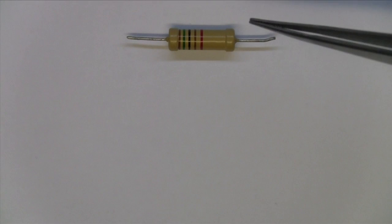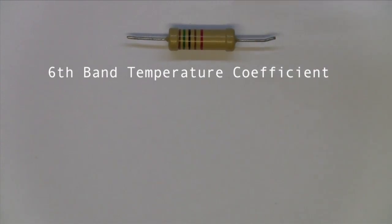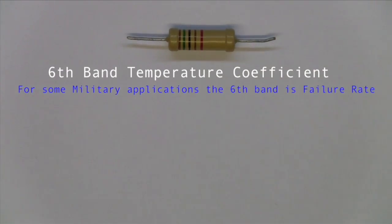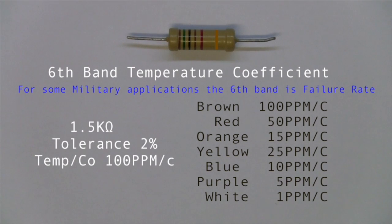Some resistors have a 6th band. The 6th band on the resistor is what's known as the temperature coefficient. If we put one in to demonstrate, that adds the temperature coefficient on the end. So if it was brown on the end, that would be 100 ppm.